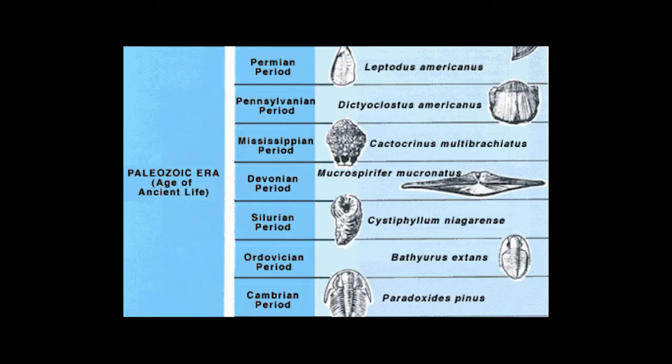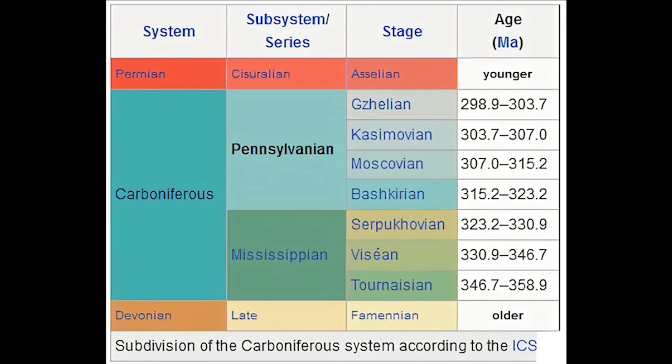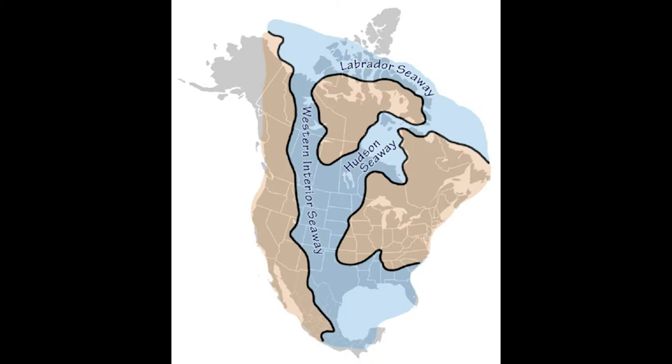Wedged in between the geologic eras of the Devonian 360 million years ago, and the Permian 300 million years ago, is the Age of Amphibians — the 60 million years we call the Carboniferous Period. The Carboniferous itself is separated into two smaller eras, called the Mississippian and Pennsylvanian. Kansas faced many different changes throughout both of these smaller sub-periods.